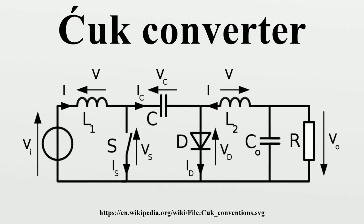A non-isolated Ćuk converter comprises two inductors, two capacitors, a switch, and a diode. Its schematic can be seen in figure 1. It is an inverting converter, so the output voltage is negative with respect to the input voltage. The capacitor C is used to transfer energy and is connected alternately to the input and to the output of the converter via the commutation of the transistor and the diode.